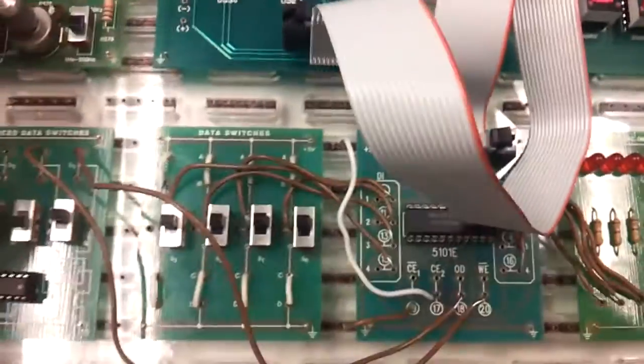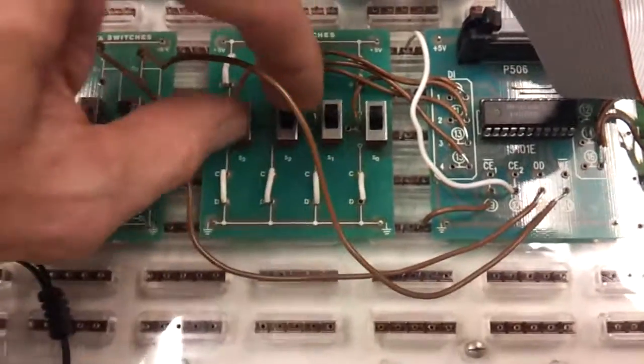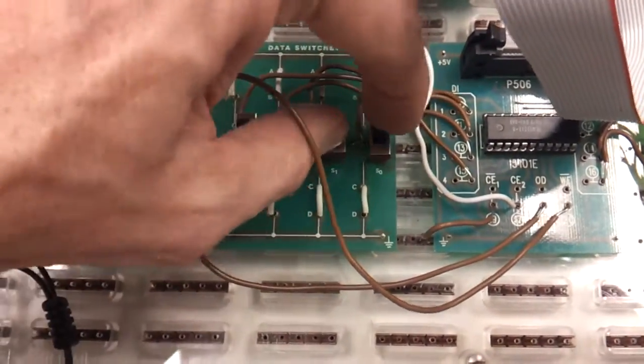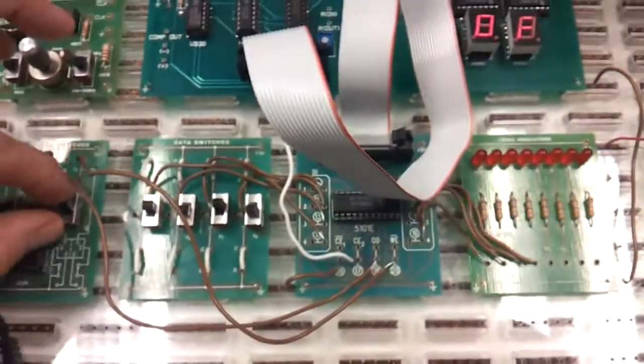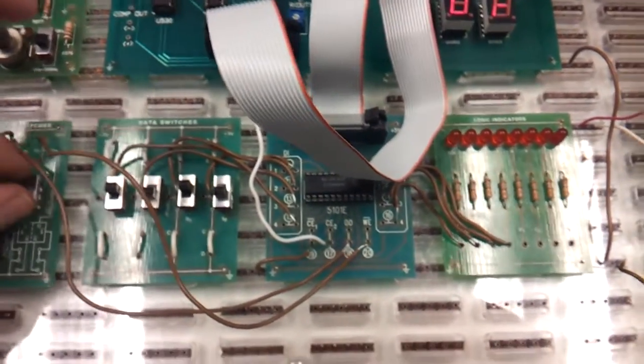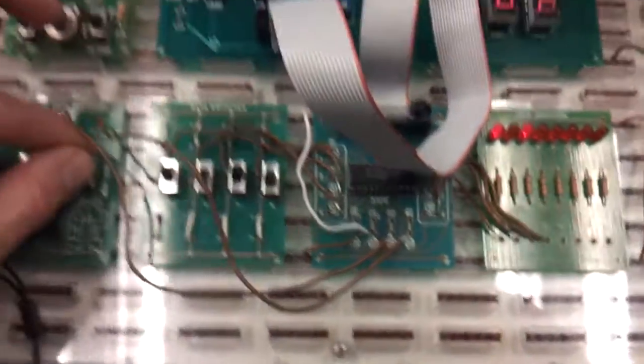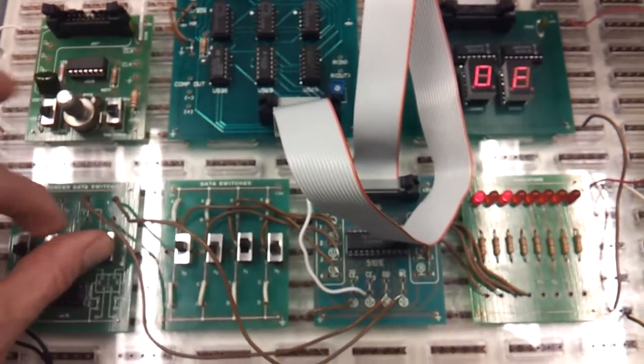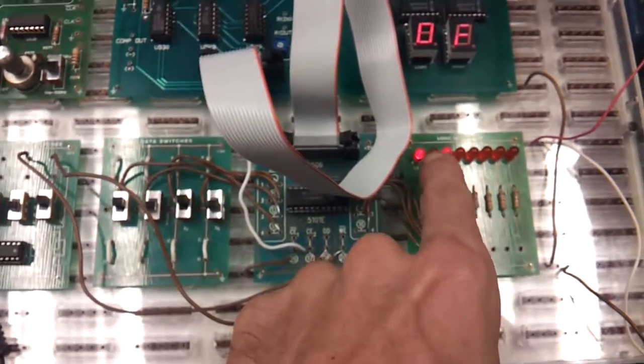So I cycle it up to F. At F, I'm going to write one, zero, one, zero. So I just strobe the write enable. When it goes back up to read, I can see the one, zero, one, zero.